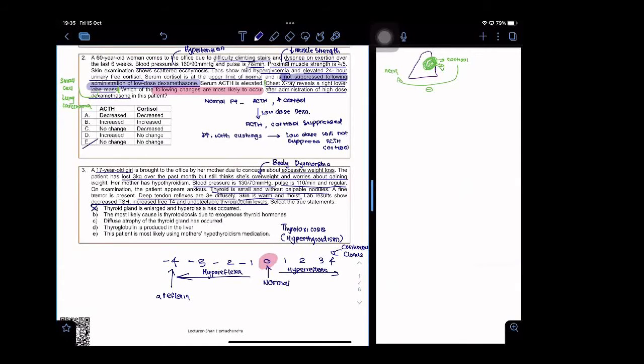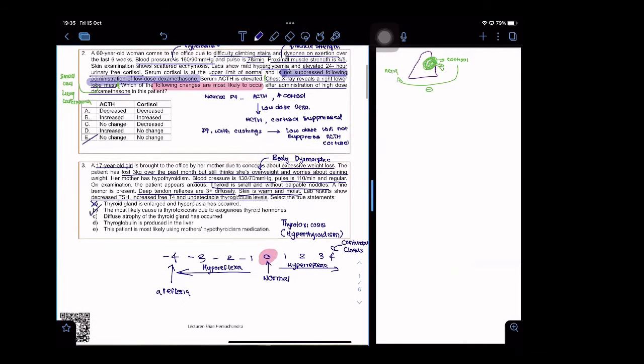The most likely cause is thyrotoxicosis due to exogenous thyroid hormone. This is true. You can see here that her mother has hypothyroidism, so that means the mother is most likely on a drug like levothyroxine. So she's probably abusing that drug. That means E is correct.